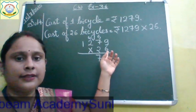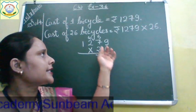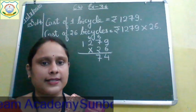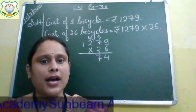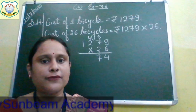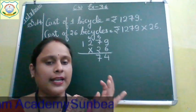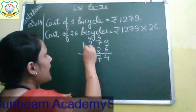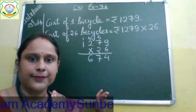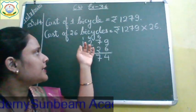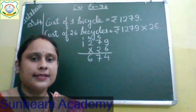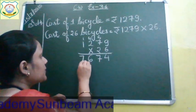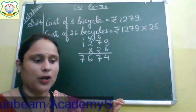Now we will multiply 6 by 2. Say the table of 6: 6 ones are 6, 6 twos are 12. Then 12 plus 4 carry is 16. So we will write 6 and carry 1. Then multiply 6 by 1: 6 ones are 6 plus 1 carry is 7. So now we have the partial product of 6, which is 7,674.